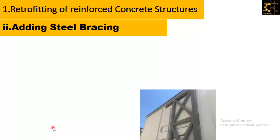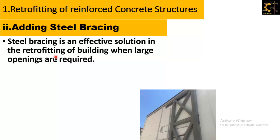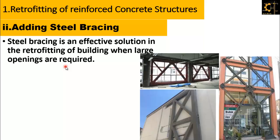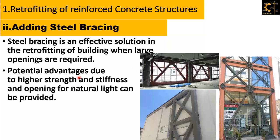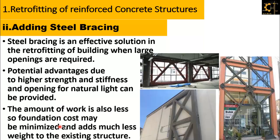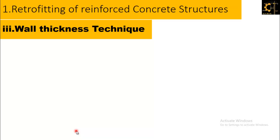The second technique of retrofitting is adding steel bracing. Steel bracing is an effective solution in the retrofitting of buildings when large openings are required. Where large openings are required, we use steel bracing. Its potential advantages include high strength and stiffness, and an opening for natural light can be provided. The amount of work is also less, so foundation cost may be minimized and it adds much less weight to the existing structure.